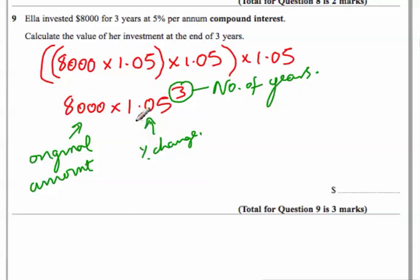So we can use this to work out any compound interest problem. And in this case, if we do that sum, you actually get $9,261. Which is pretty good if you ask me. Yeah. I'll take that.